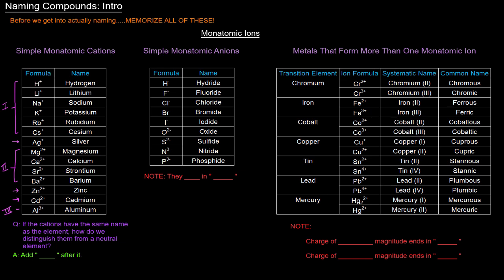Now, as far as their names go, their names are just the same as the actual element name. So H+ is hydrogen, Zn2+ is zinc, Mg2+ is magnesium. But then the question comes, if the cations have the same name as the element, how do we distinguish them from a neutral element?